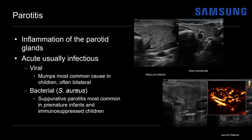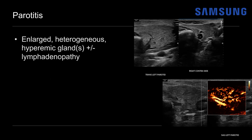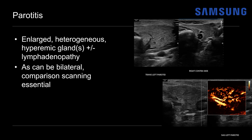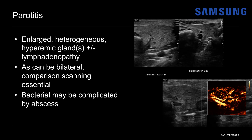Bacterial parotiditis can also occur, typically from Staph aureus, but that's seen more as a suppurative parotiditis in premature infants and immunosuppressed children — so less common than viral. The ultrasound appearance of parotiditis is an enlarged heterogeneous hyperemic gland or glands, and lymphadenopathy may be present. Given that parotiditis can be bilateral, it's important to do comparison scanning of the other gland. In the setting of bacterial parotiditis, it can be complicated by abscess formation, so it's important to look for a dominant collection.